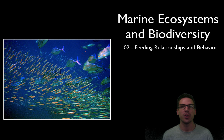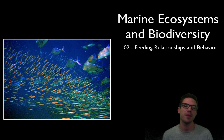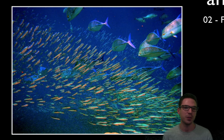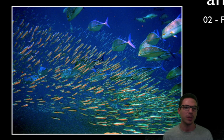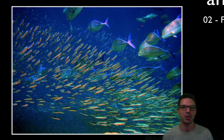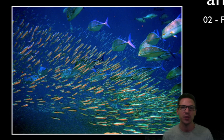Hey guys, welcome to part two of our unit on marine ecosystems and biodiversity. In this video we're going to be specifically looking at feeding relationships and behavior. Here I have a picture of different species of fish. The larger ones to the right are giant kingfish and they are currently preying on these smaller guys, which are anchovies. When we take a look at a picture like this we should have a pretty good idea about what's going on — not just that one's eating the other, but how they impact each other and some of the behaviors that come out of this.